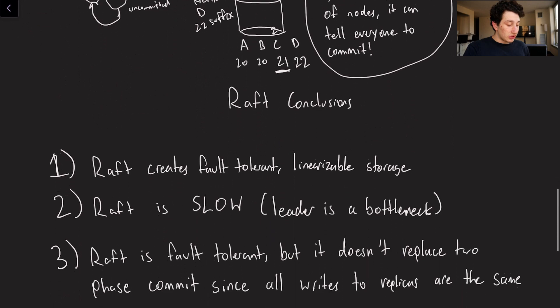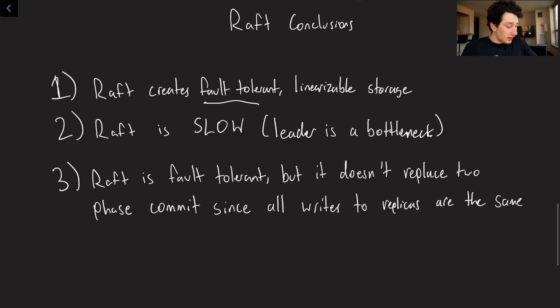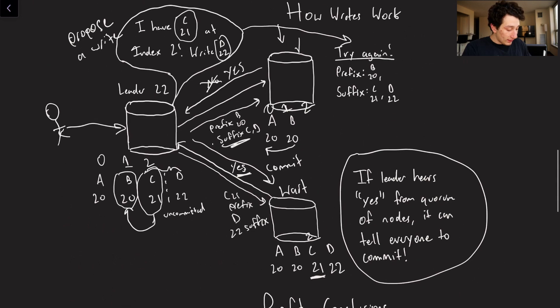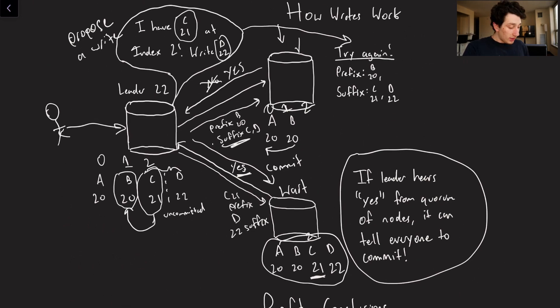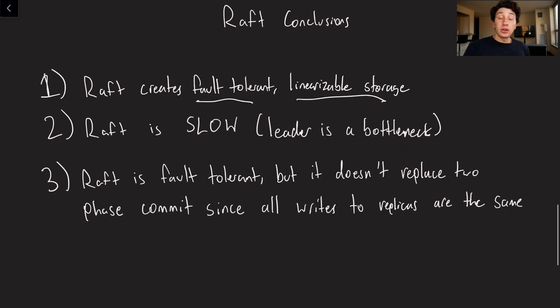So let's talk about some conclusions of Raft, because obviously, it is a complicated system and it has its uses. So one, Raft creates fault tolerant, linearizable storage. The entire point of this thing is to build this guy right here, a distributed log, because when we can order our writes, and we can make sure that those writes are never going away, we have a ton of super useful properties of our database that allows us to ensure correctness and build systems on top of that. Those are going to be for future videos, but I'm looking forward to covering those.